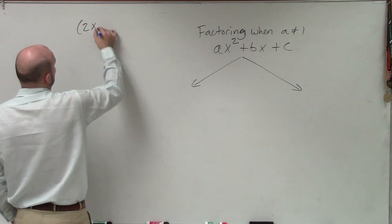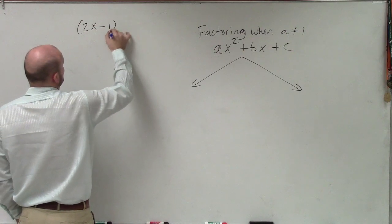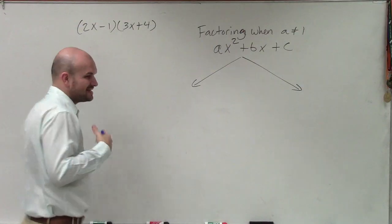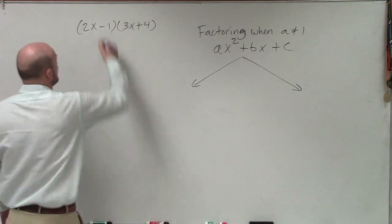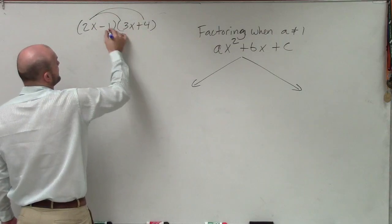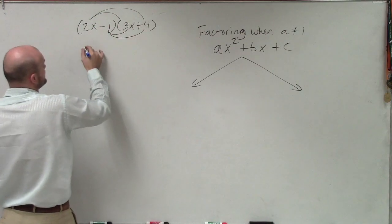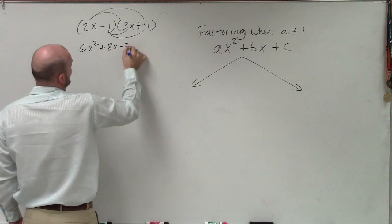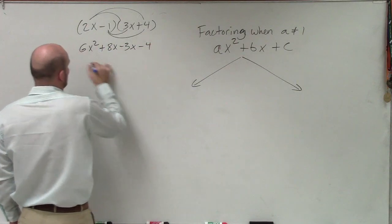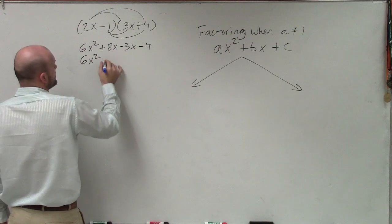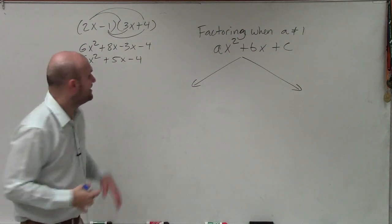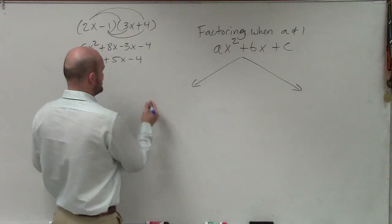So let's pretend our product is 2x minus 1 times 3x plus 4. If I wanted to check my answer, I can always go back and multiply everything out. So in this case, I have 6x squared plus 8x minus 3x minus 4. So therefore, I have 6x squared plus 5x minus 4. You might be saying, what are you doing? What I'm doing is I'm creating a problem that I'm going to show you how to factor.